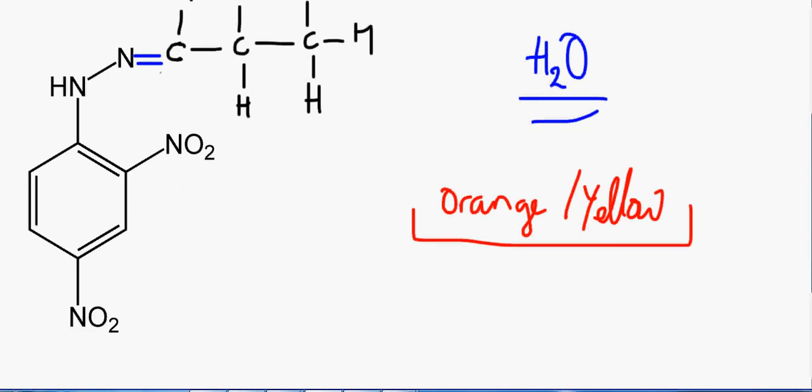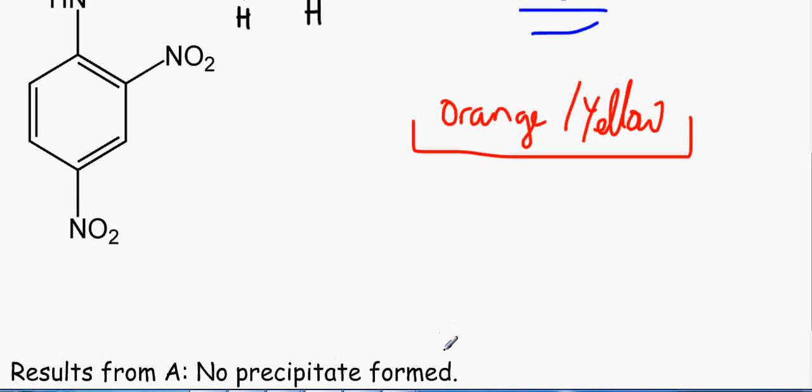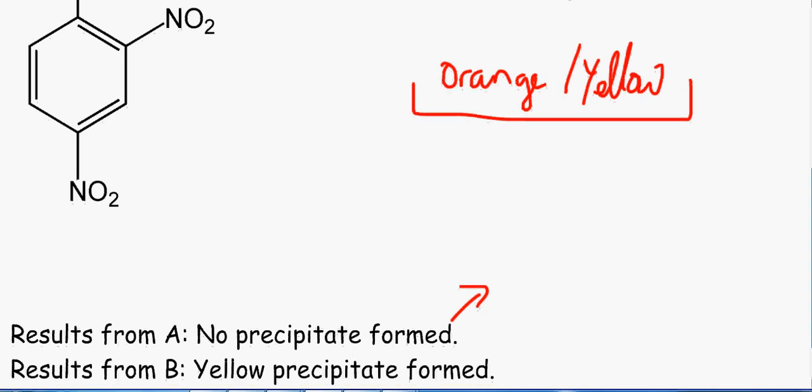So these are the results. Results from A, no precipitate formed. That is expected, because we do not have a carbonyl group in the tertiary alcohol. So the results from B, a yellow precipitate is formed, which sounds about right. That means we do have a carbonyl group.